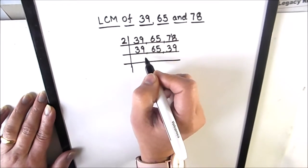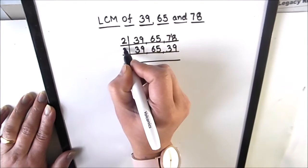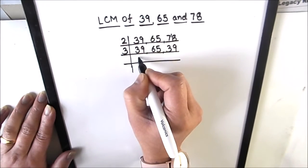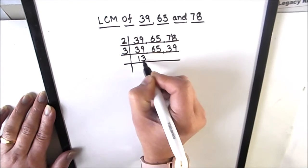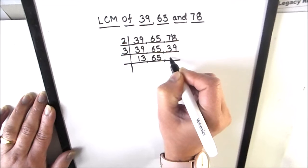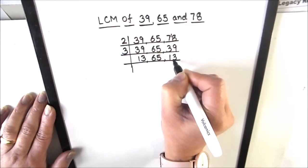So now we have all odd numbers and we see that 39 is divisible by number 3, so we are going to use 3 to divide 39. 3 times 1 is 3, 3 times 3 is 9. 65 is not fully divisible, we will write it as is, and 3 times 1 is 3, 3 times 3 is 9.